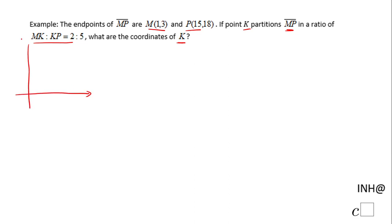We have point M at (1,3), which should be somewhere like this, and P is (15,18). This is the segment MP and we need to find a point K right here.